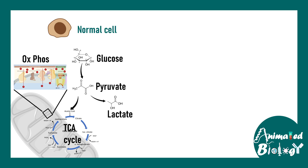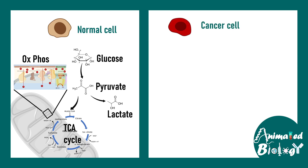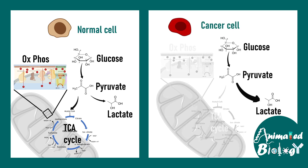Oxidative phosphorylation is preferred when there is oxygen. In the case of a cancer cell, glucose gets converted more into lactate — pyruvate eventually forms lactate — and only a little amount of oxidative phosphorylation happens. This shift in metabolism is quite advantageous to the cancer cell.